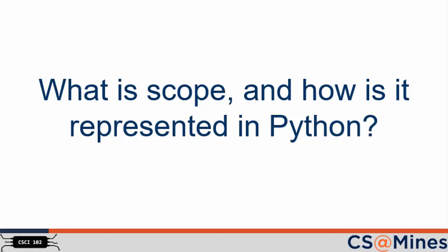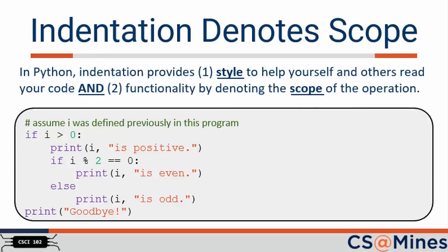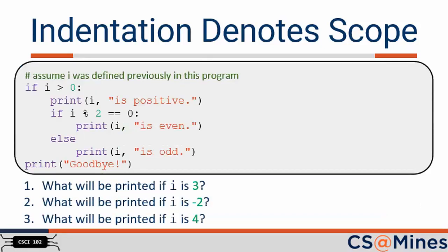We are now going to talk about scope and its representation in Python. Scoping refers to whether a variable is visible in a given part of your code. In Python, indentation is extremely important — it helps with the style and readability of your code, and also denotes the scope of variables during execution. In this code, you can assume the variable i was previously defined. Since i was previously defined, we are able to use it within the if statement shown. Using our knowledge of branching, consider what will be printed if the variable i is 3, negative 2, and 4. We suggest you pause the video, walk through this code, then type it into a Python file, execute it, and see if you are correct.